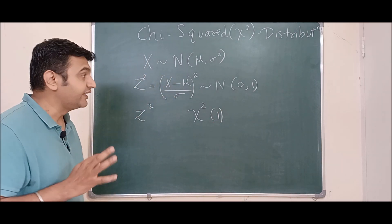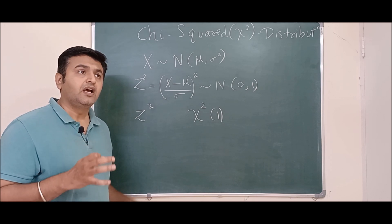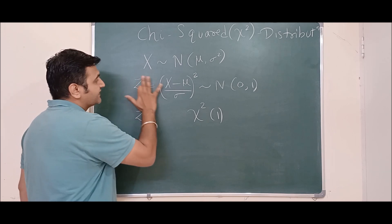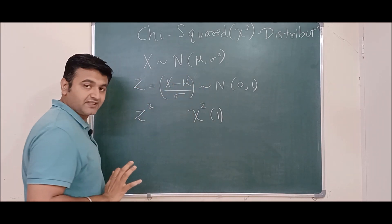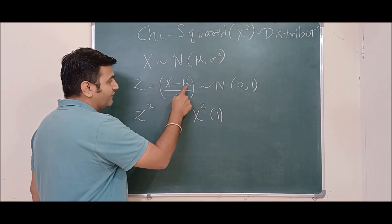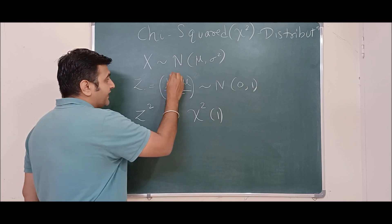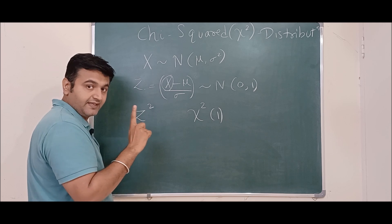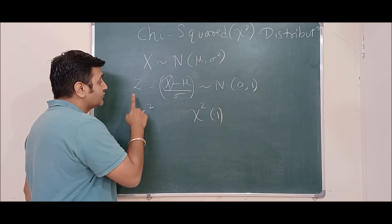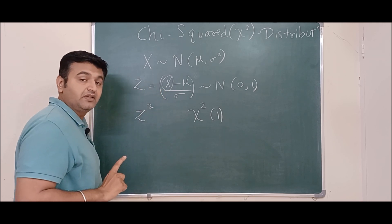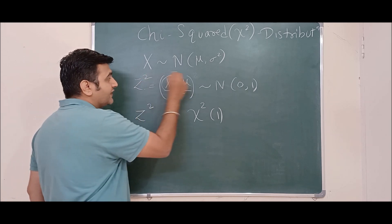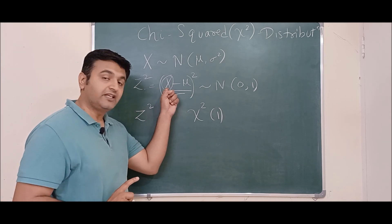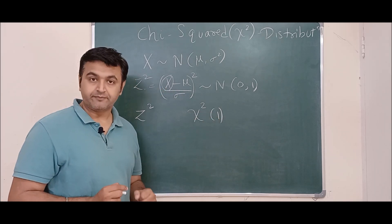What do we mean by degree of freedom? Degree of freedom is nothing but the number of independent variables. In this case, Z equals X minus mu divided by sigma, where mu and sigma are constants but X is varying. So Z depends only on one independent variable X, and therefore Z-squared also has only one independent variable, giving 1 degree of freedom.